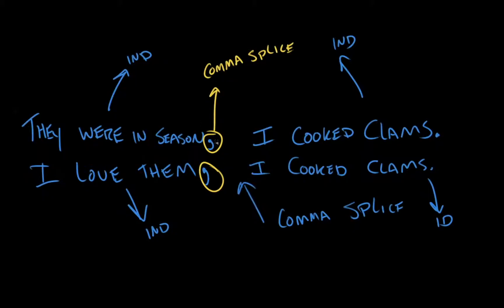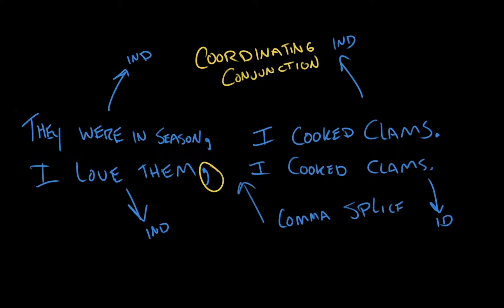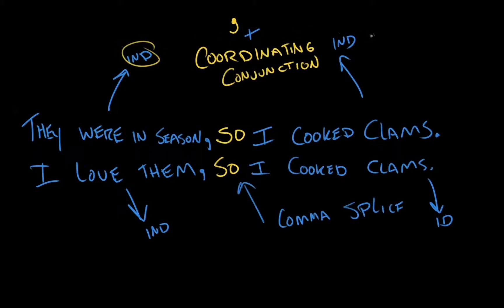There are a couple of things we can do to fix this. One option is to replace the comma with a semicolon: 'They were in season; I cooked clams.' However, the most popular way is to insert a coordinating conjunction in between — the opposite of a subordinating conjunction. So: 'They were in season, so I cooked clams.' Or: 'I love them, so I cooked clams.' The coordinating conjunctions of English are the only way to connect two independent clauses to one another — with a comma plus a coordinating conjunction.